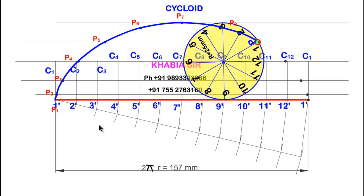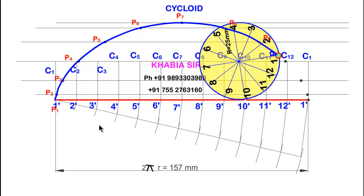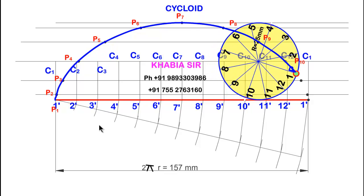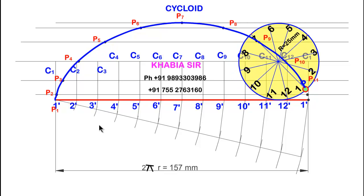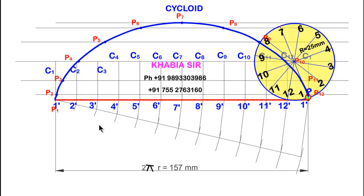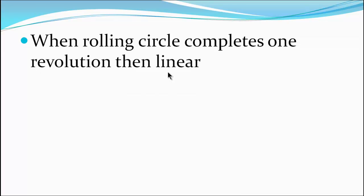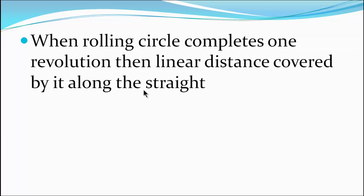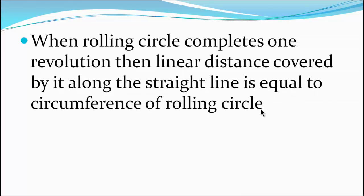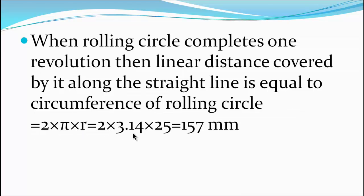One revolution of the rolling circle is about to complete. In one revolution, the rolling circle moves forward along the straight line equal to its circumference, 2πr. One revolution is complete, and this curve formed is called a cycloid. When the rolling circle completes one revolution, the linear distance covered along the straight line equals the circumference: 2πr = 2 × 3.14 × 25 = 157 mm.